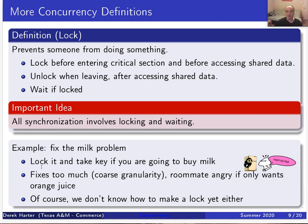To fix the too-much-milk problem we could use a physical lock on the refrigerator. The roommate going to get milk would lock the refrigerator as a signal that milk is being bought. But this example is a bit too coarse-grained — the other roommate would be angry if they just wanted orange juice. Another problem is we don't really know how to make locks yet. So we need to simulate locking using only atomic load and store operations as building blocks, which in the real-world analogy we'll simulate using notes on the refrigerator.